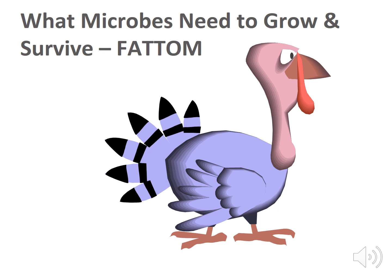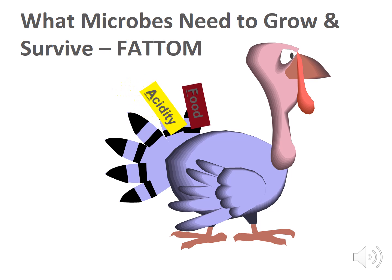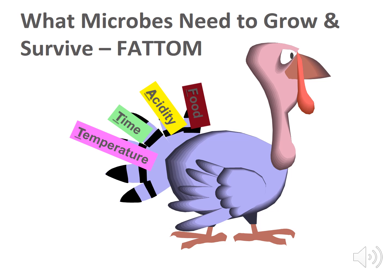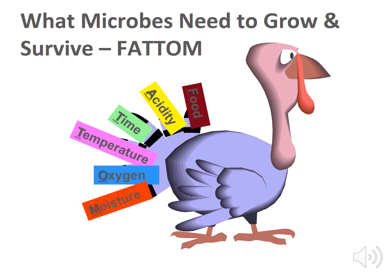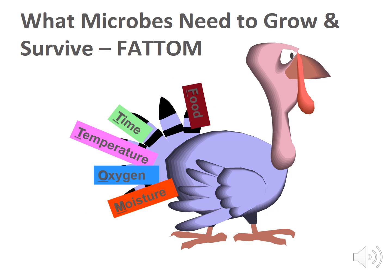His six feathers represent these conditions. Microbes need food, a perfect acidity level, time to grow in the perfect temperature range, oxygen — some organisms need oxygen while others survive without it — and finally, moisture. Pluck a feather: remove one of the conditions to break the chain and to stop bacterial growth. Let's look at each of these factors.